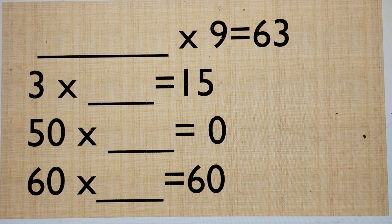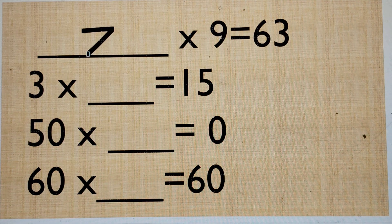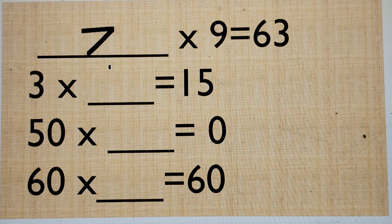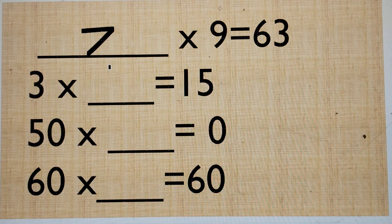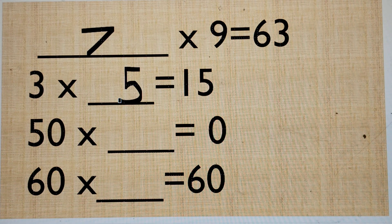Now, what should I multiply with 9 so that I get 63? 7. Yes, 7 times 9 is 63. Now, what should I multiply with 3 so that I get 15? 5. So 3 times 5 is 15.